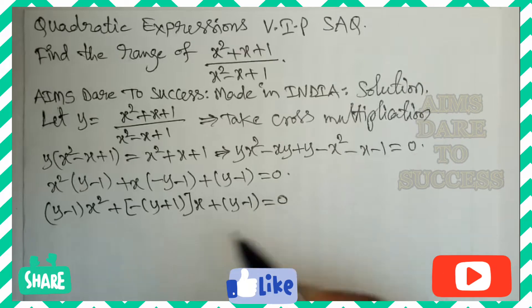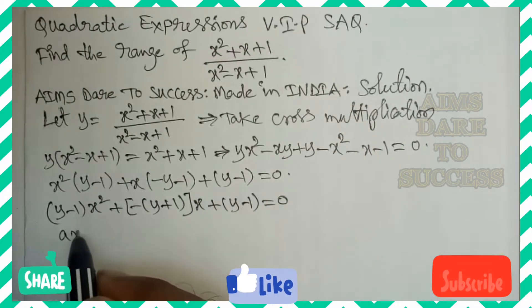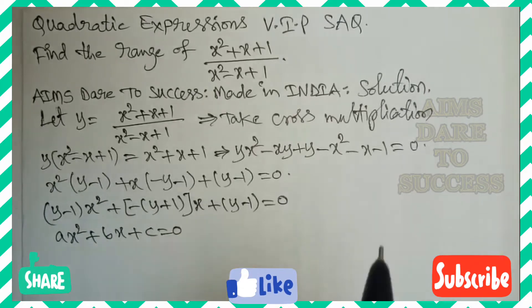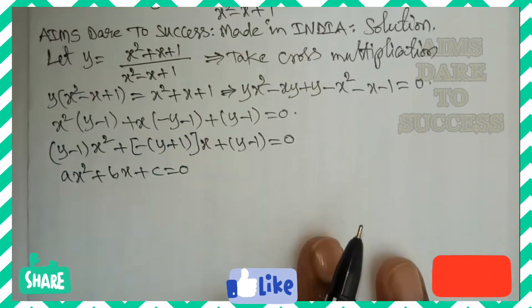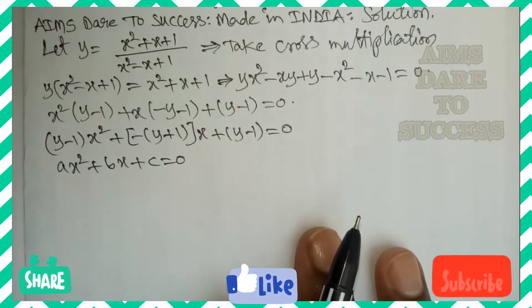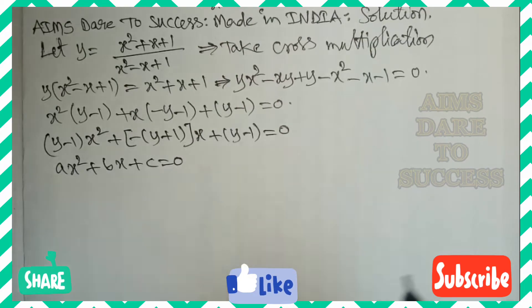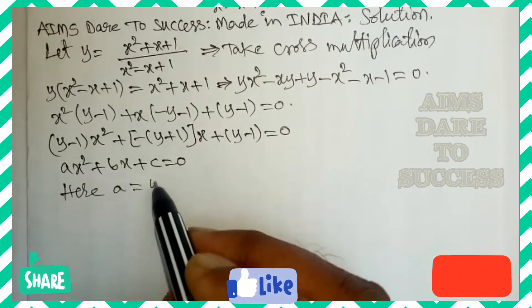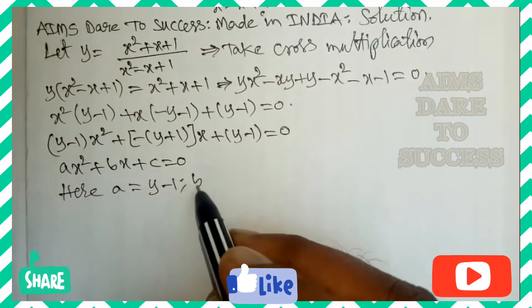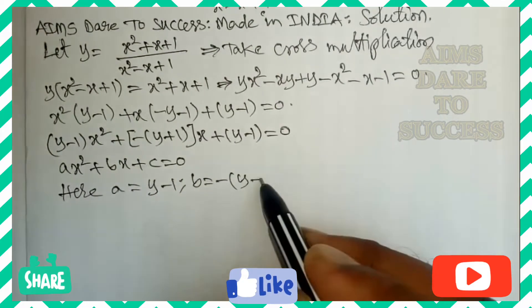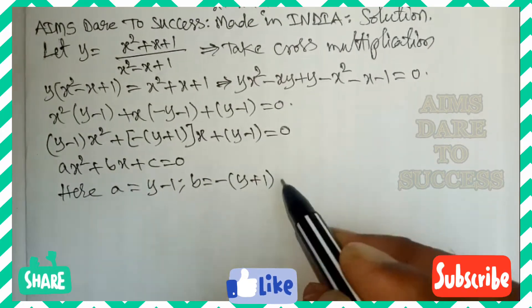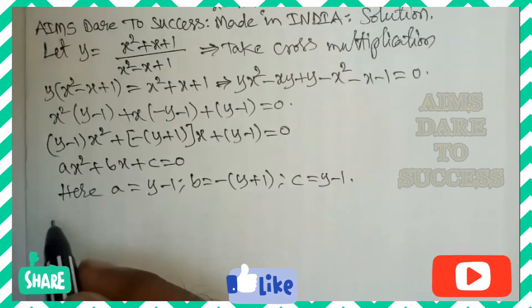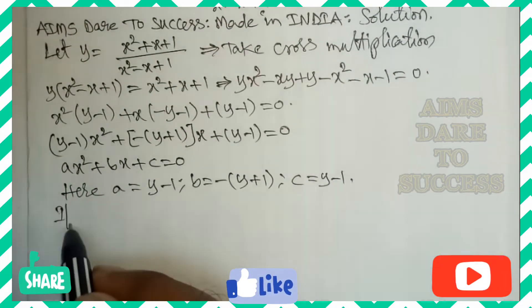This is in the form of ax² + bx + c = 0, a quadratic equation. Here a = (y - 1), b = -(y + 1), and c = (y - 1). These are our a, b, c values.